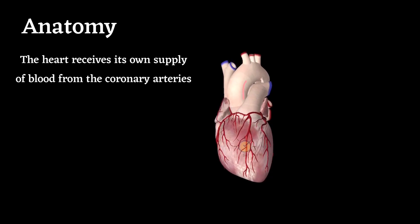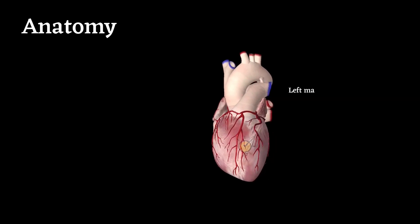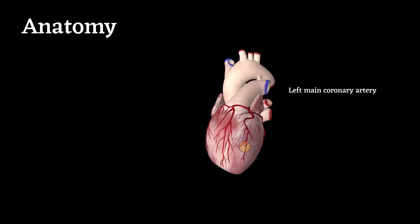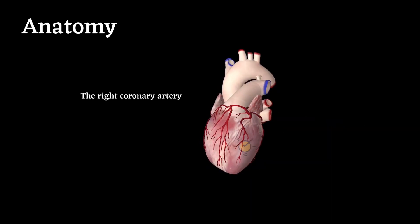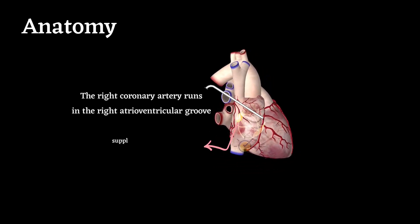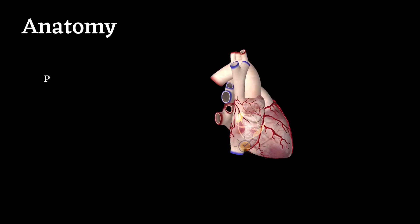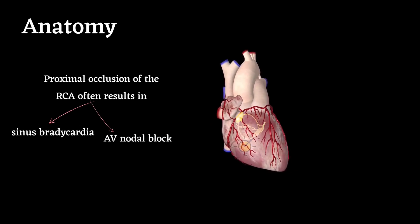The coronary arteries are the first branch of the aorta, arising from the ascending aorta immediately above the aortic valve. The left main coronary artery, which is larger, divides into the left anterior descending artery and the left circumflex artery. The right coronary artery runs in the right atrioventricular groove, supplying the sinoatrial node in about 60% of individuals and the atrioventricular node in about 90%.